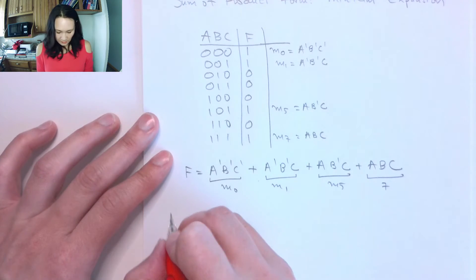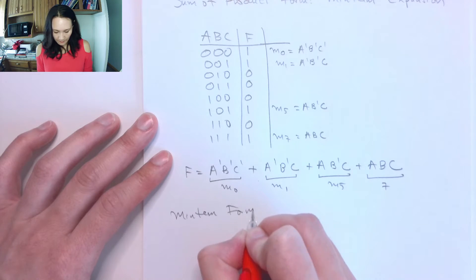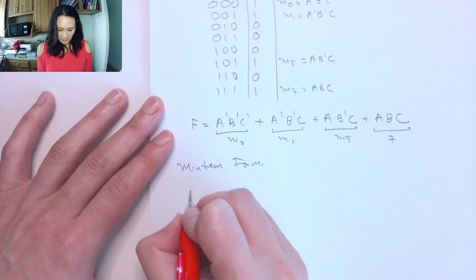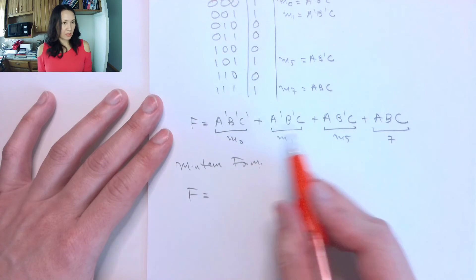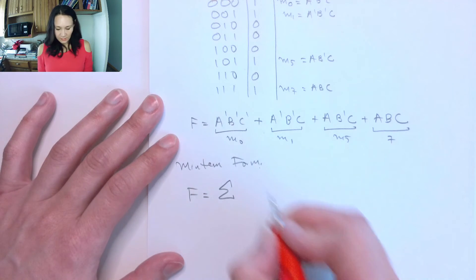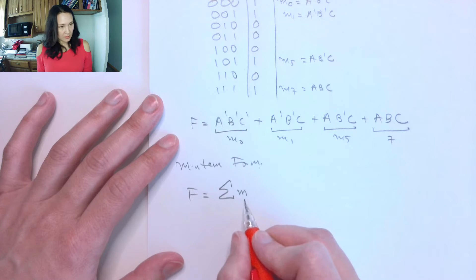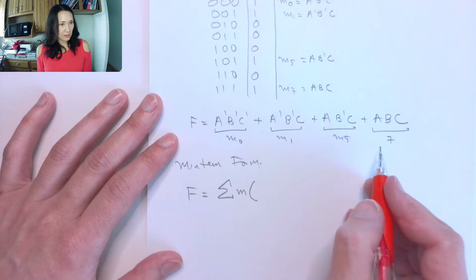So if you see this in min-term form, this function would look like this. F can be expressed as a sum of min-terms, because we're adding these together. So here is our sum. Our notation for min-terms is this little m, and then we just make a list of all of these numbers.